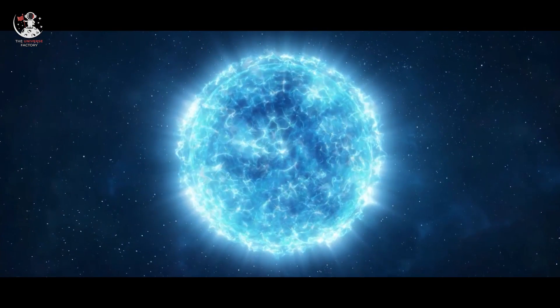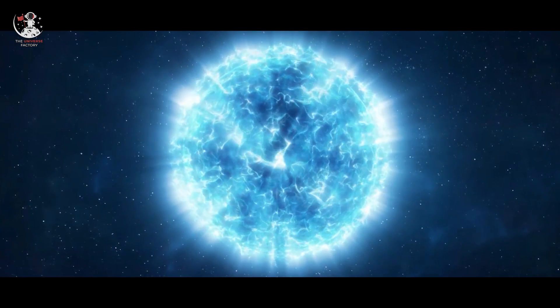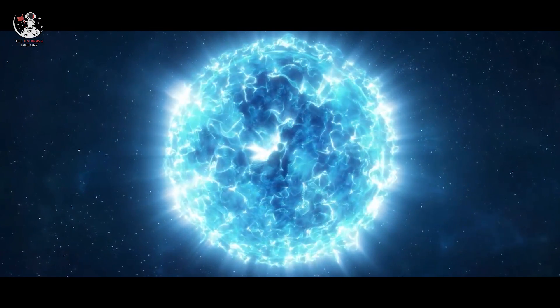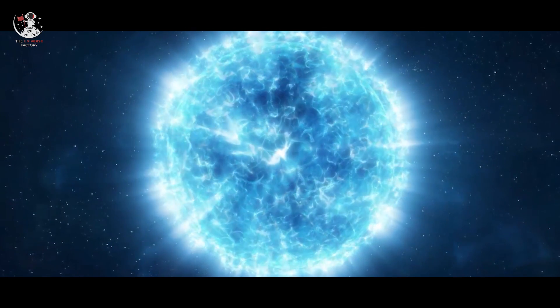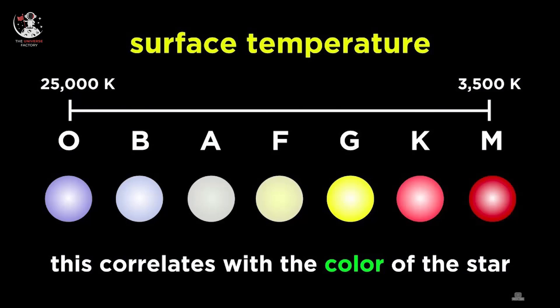Now, generally, stars are divided into seven different classifications by Harvard Classification Scheme based on decreasing surface temperatures. They are O, B, A, F, G, K, and M.